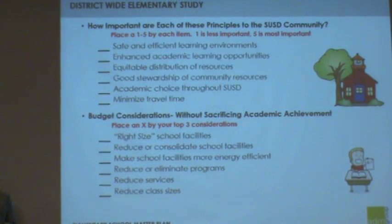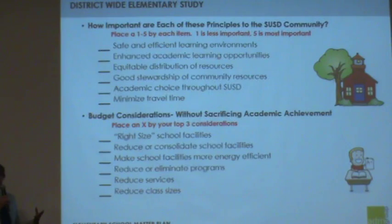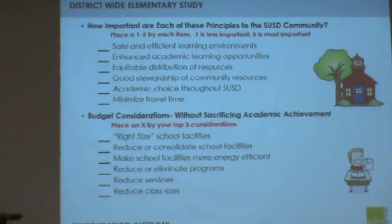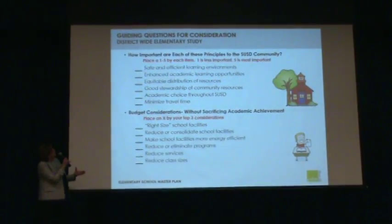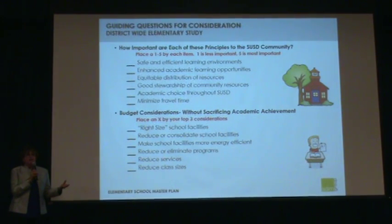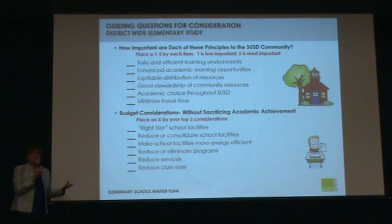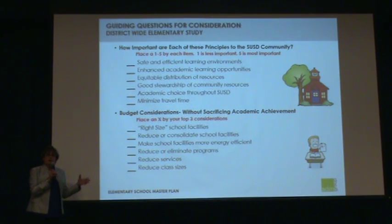We're also going to be handing out a questionnaire asking you to write some of the important things to you. The questionnaire asks: are you a parent? Are you a community member? What school are you affiliated with? We know things like safety and efficiency in learning environments, and minimizing travel time, are all very important. We'd like you to put a one through five by each item — number one being the least important, number five being the most important.